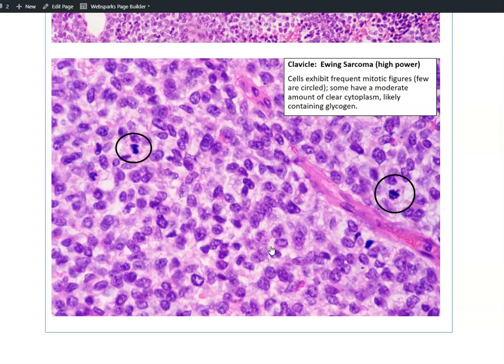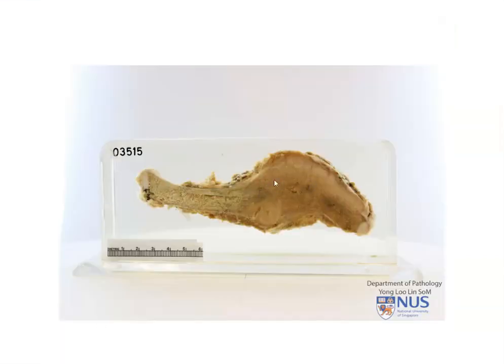Ewing sarcoma is a high-grade tumor. It is aggressive and rapidly growing. It usually occurs in children and in the long bones — for example, the tubular bones; the femur is a favorite site. And very importantly, it arises in the diaphysis of the bone.